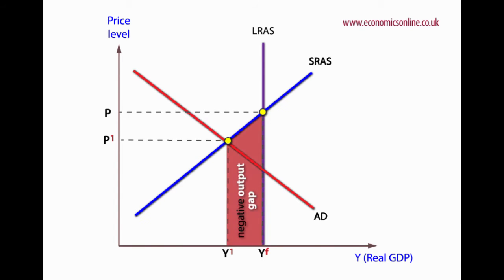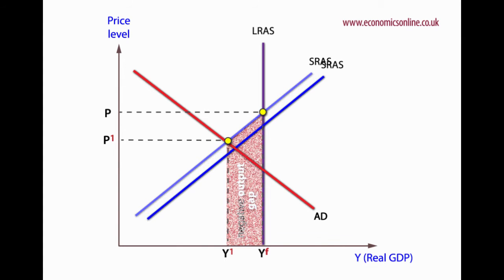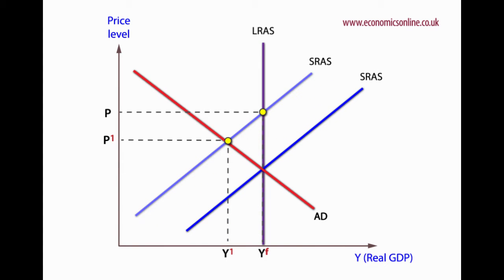The classical economists assumed that wages would adjust downwards, given the higher level of unemployment. This would cause short-run aggregate supply to increase, and the curve moved to the right. Eventually, a new equilibrium would be found with lower wages and higher output, and the economy would move back to YF.